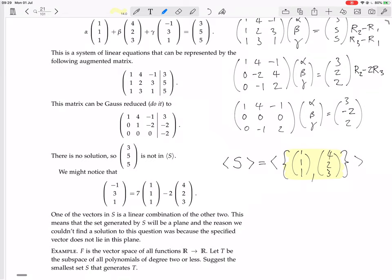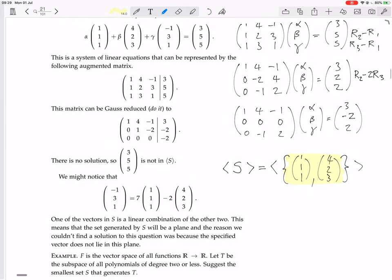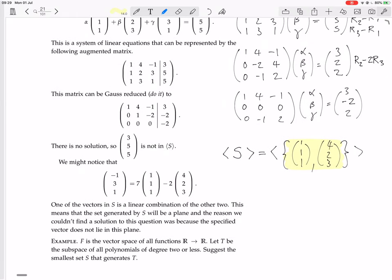So it's automatically in the set generated by just those two vectors. So the set generated by S, even though S has got three vectors, is actually a set generated by even just two vectors, so it's a plane.